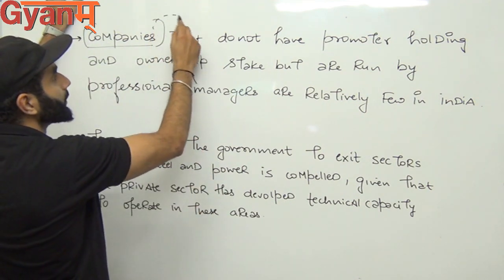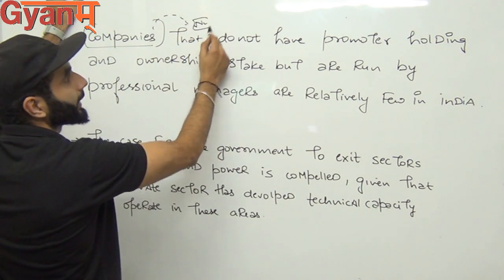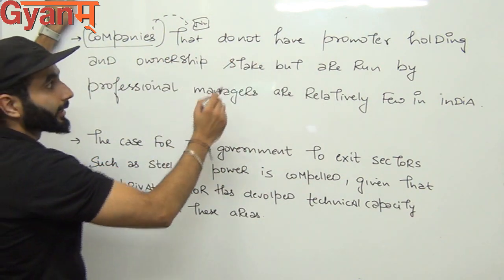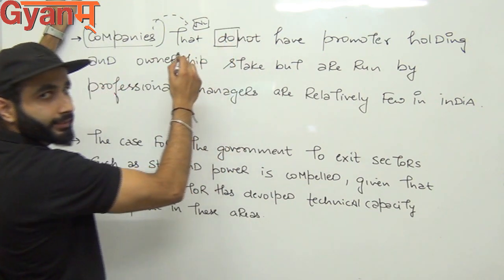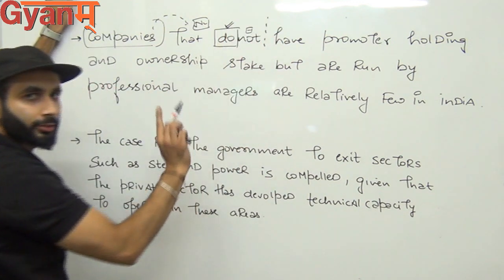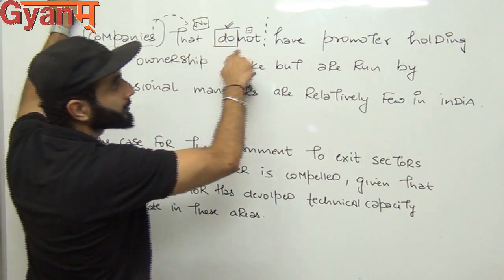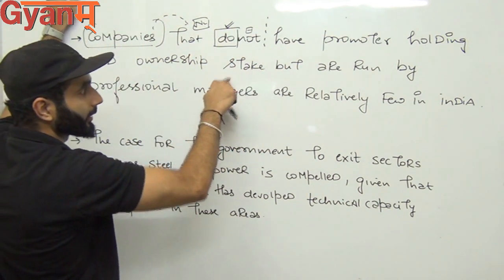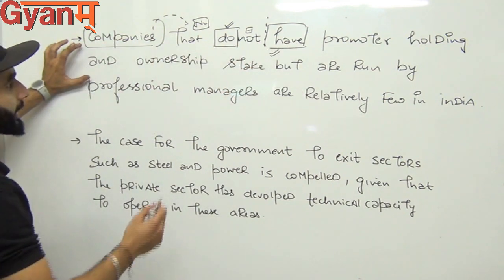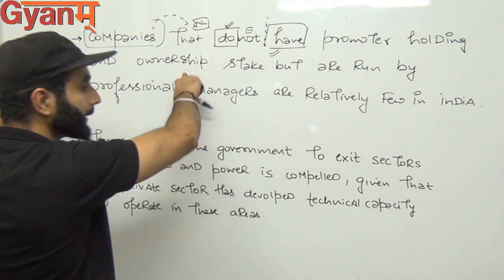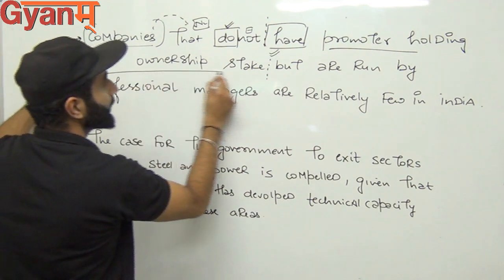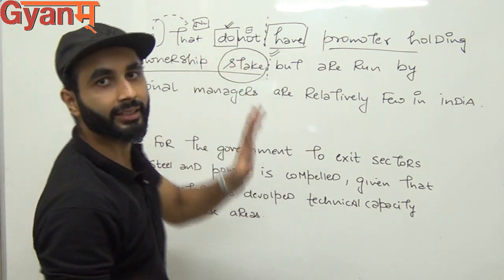Companies is plural, non-living, so we can use 'which' or 'that'. Companies — those that have promoter holding and ownership stake — this is the subject. Now 'do not have': 'do' is the correct verb form for plural. Companies that do not have promoter holding and ownership stake — these are all linked to the last word. Just hold on to the last word: stake.